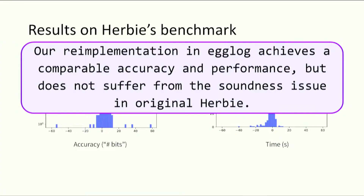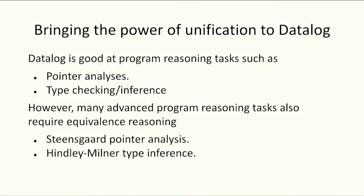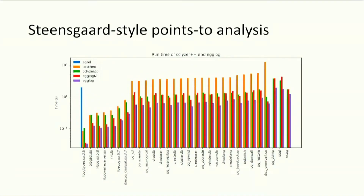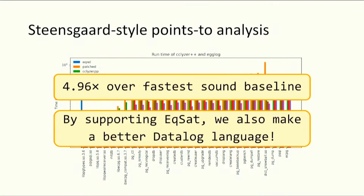Because we no longer need to work around unsoundness, we made Herbie's design drastically simpler. Our last case study is on the datalog side. People use datalog for many program reasoning tasks such as points-to analysis, type checking, and type inference. However, many advanced tasks also require equivalence reasoning — such as points-to analysis and type inference — which are hard to express efficiently in datalog. Such equivalence reasoning is supported in egglog as a built-in mechanism. We benchmarked egglog and datalog on these analyses, achieving almost five times speedup over the fastest sound baseline, supporting our claim that egglog is also a better datalog language.